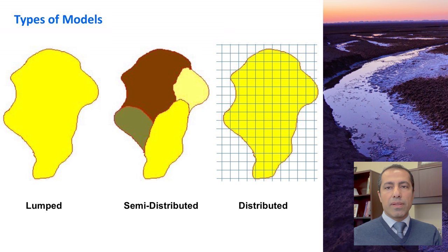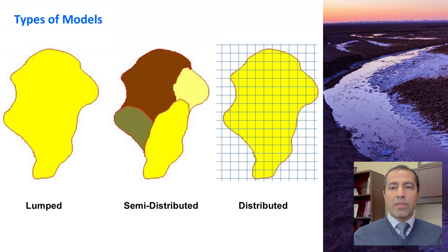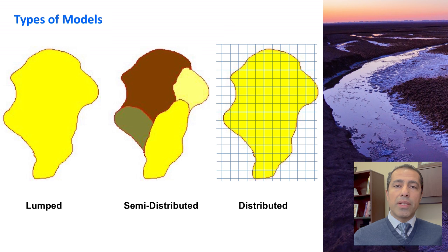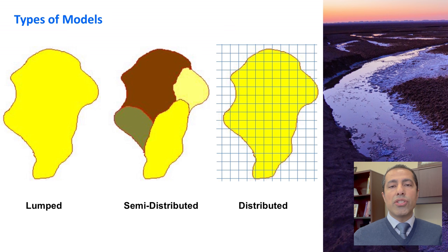First, some definitions. Lumped models describe the entire area as one single unit. We calculate runoff at the outlet and we won't be able to produce any spatial information within this single unit. A semi-distributed model is basically a bunch of lumped models connected together. Each sub-basin will be treated like a single unit; outputs from different units can be linked together and routed toward downstream.